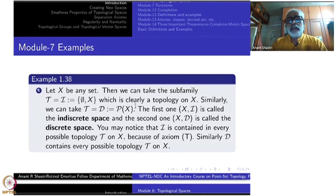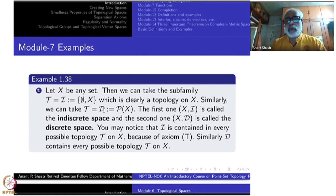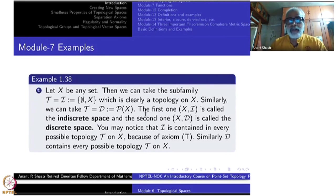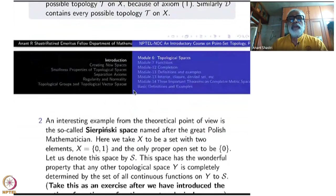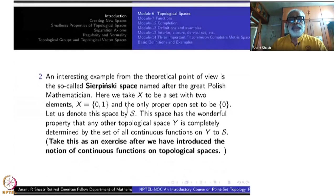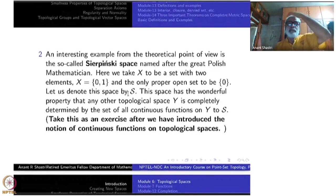So the least one and the biggest one — that's what we have observed. Now these things did not actually come from a metric space. We have created them without reference to a metric space. But maybe they are metrizable — that's a different problem altogether — so let us examine that later on.